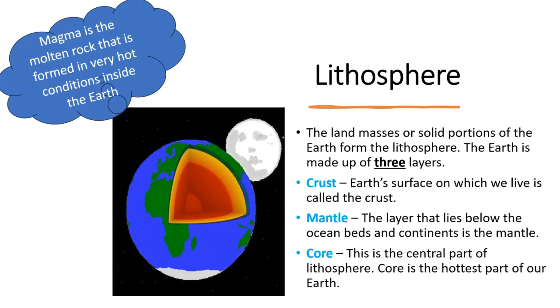Core. This is the central part of the lithosphere. Core is the hottest part of our earth. It is made up of iron and nickel. The core is divided into two layers, inner core and the outer core.